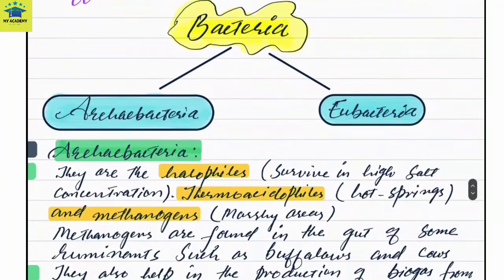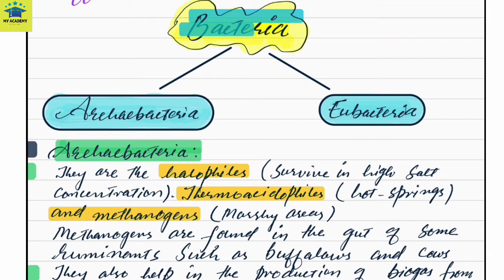Bacteria are further classified into two types: Archaebacteria and Eubacteria. Let us discuss each of them one by one.